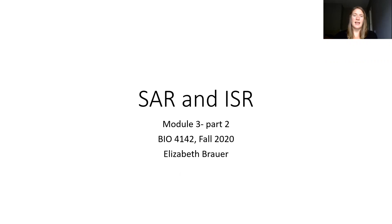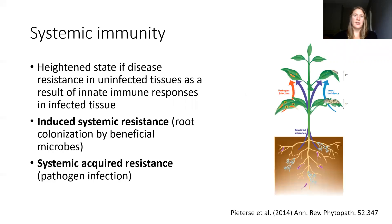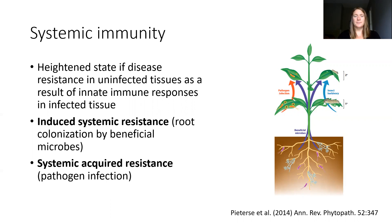Today we're talking about SAR and ISR, and both of these are part of the systemic immunity of plants. This is how plants communicate from one infected tissue to a completely uninfected distal tissue and activate defense responses to produce broad spectrum resistance. The two forms are induced systemic resistance, or ISR, and systemic acquired resistance, SAR.